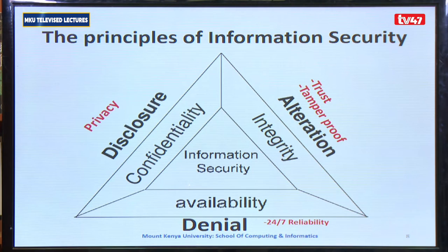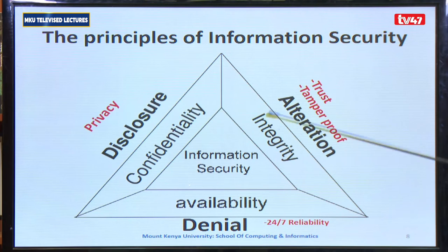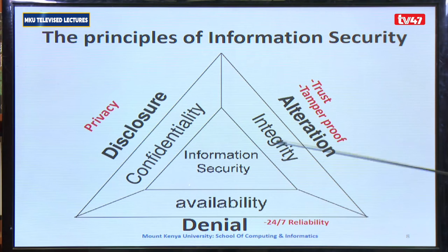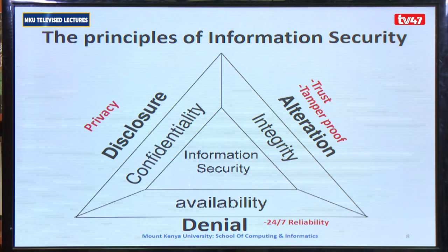Integrity is all about ensuring data is tamper-proof. Do we have trust between a sender A and a receiver B? The moment that is compromised, we say data has been altered and it's not in its original state. And lastly is availability — are resources available to the intended people throughout, within a 24/7 liability? And the moment that is denied, it leads to what we call DOS, denial of service.